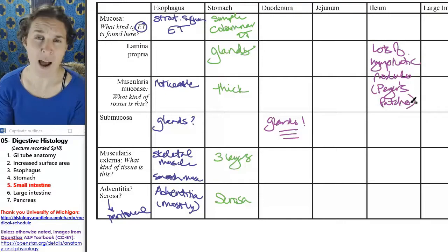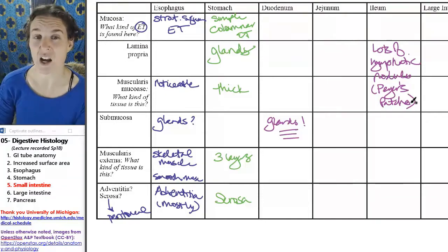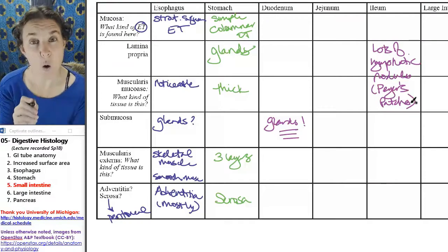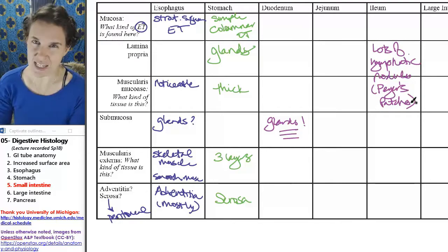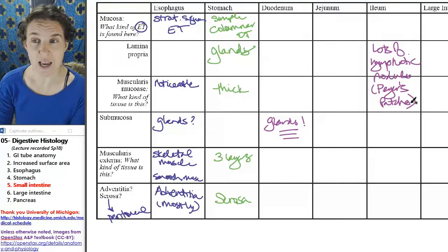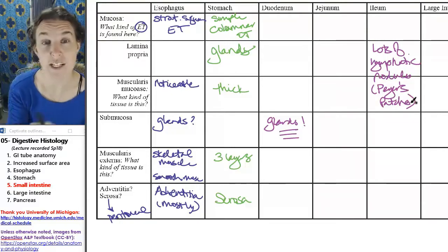I don't know why they're called something special there, but they're just the lymphatic nodules. But if you see a whole bunch of them, chances are you're in the ileum. Sometimes the large intestine also has lots of lymphatic nodules. Well, we'll save the large intestine for the next one.